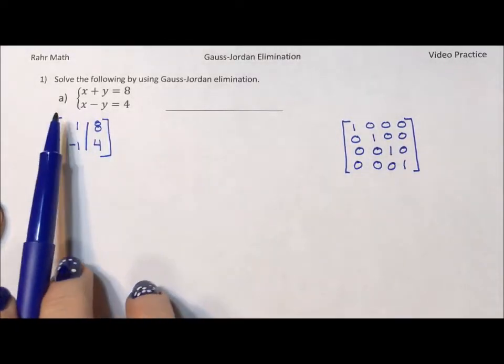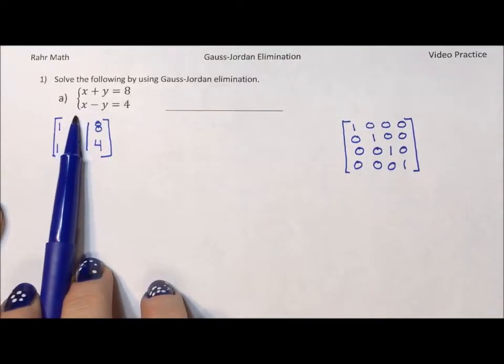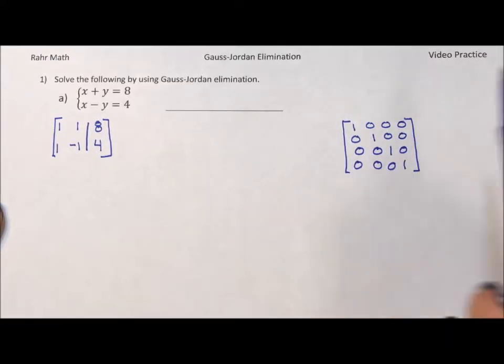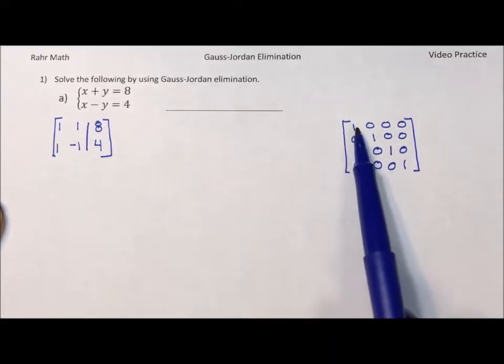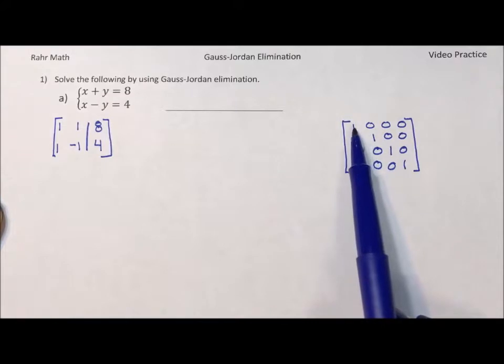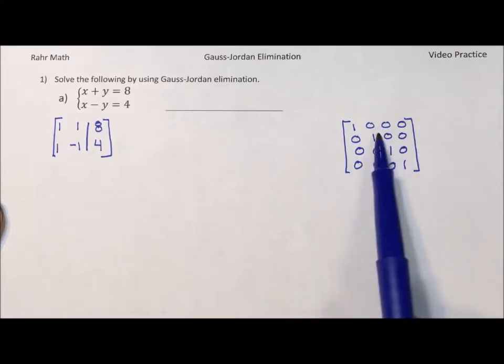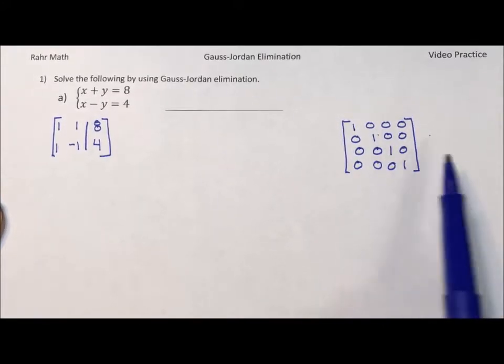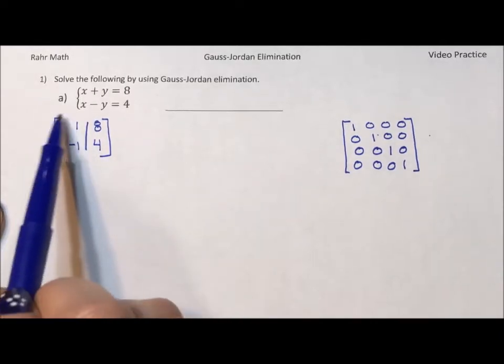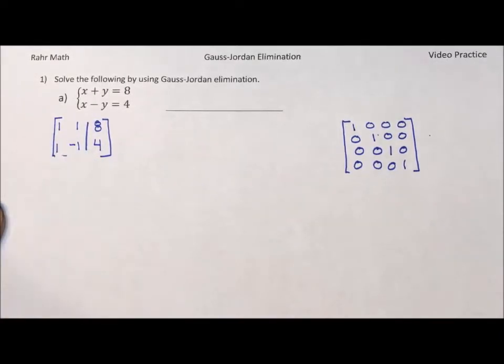And if this column represents x and this column represents y and eventually more variables, if we had an augmented matrix, we would have x equals y equals z equals w equals. So that's what we want. We want an identity matrix on the left.